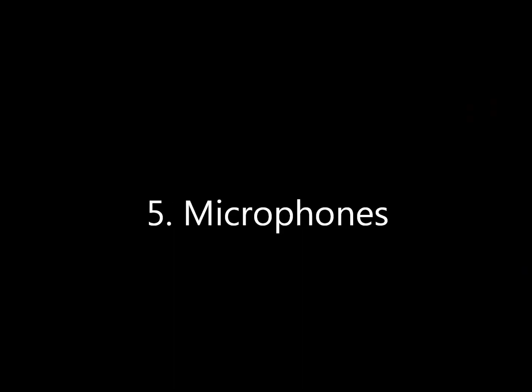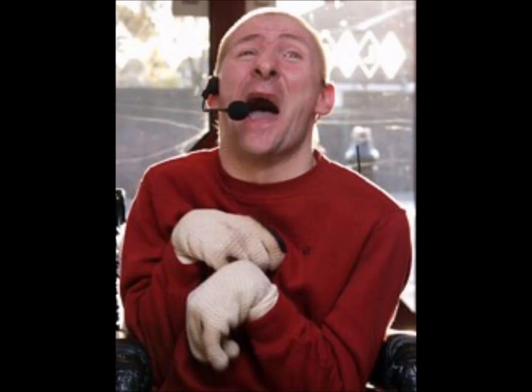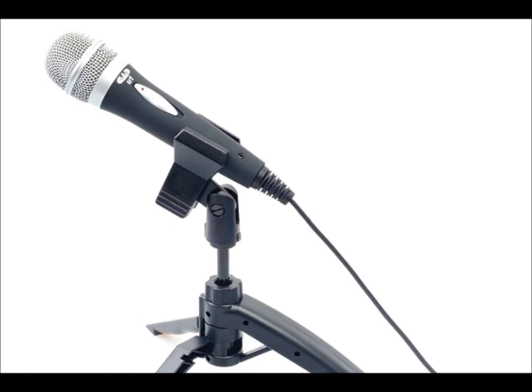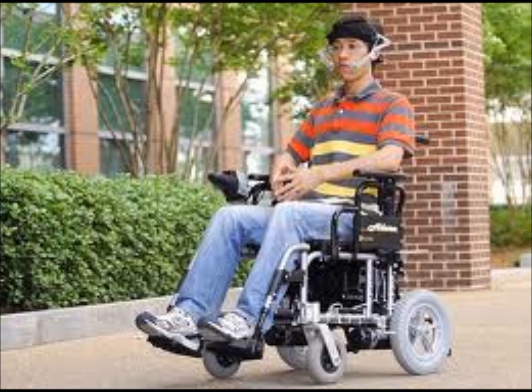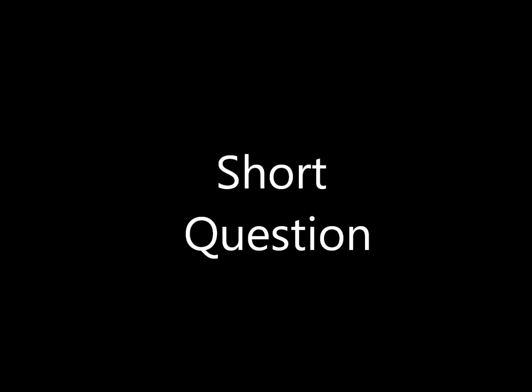The last one is a microphone. A microphone can be useful for people who find it difficult to use a keyboard or a mouse. People can say their input out loud and specialist software can be used to convert the speech into text. This text can be displayed on the screen or used in different kinds of situations.